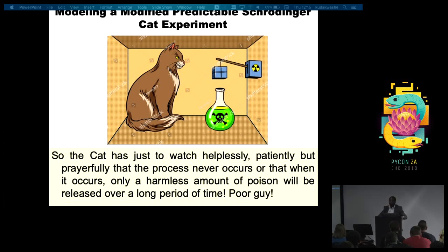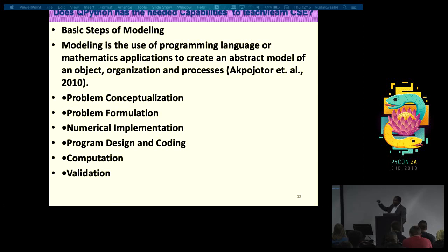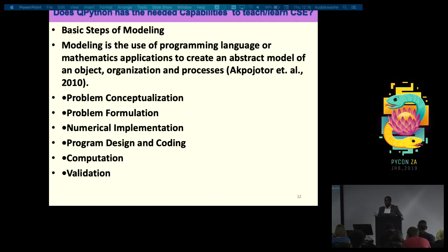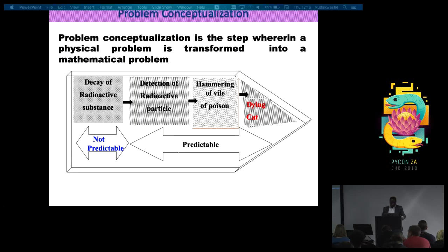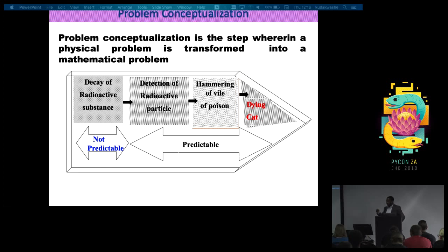Schrödinger used this to ridicule the idea that you cannot predict such a microscopic system. The poor cat is just waiting for the radioactive process to occur, not knowing if the amount of poison released will be enough to kill it. So we want to model that problem. We take out the radioactive part — that is not predictable, so we leave that out — and take the predictable part: the detection of the radioactive material, the hammering of the vial, and the killing of the cat. All these are predictable, and this is the part we will model.